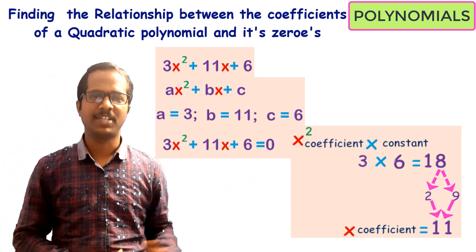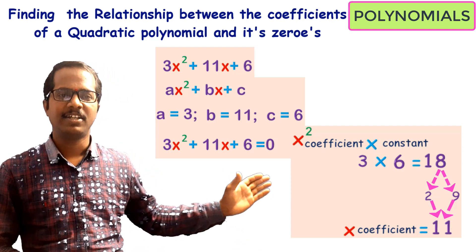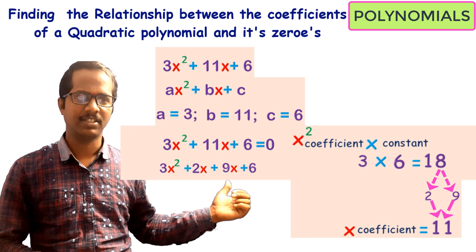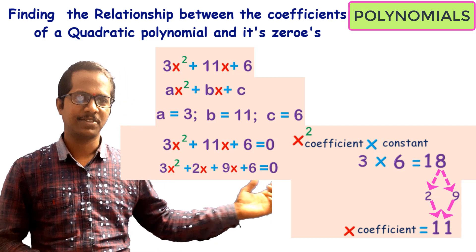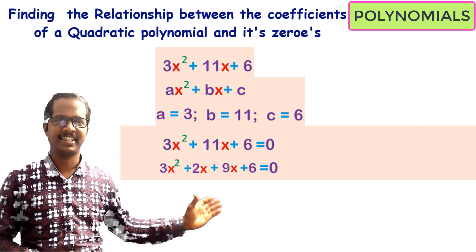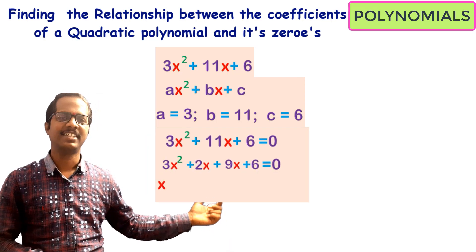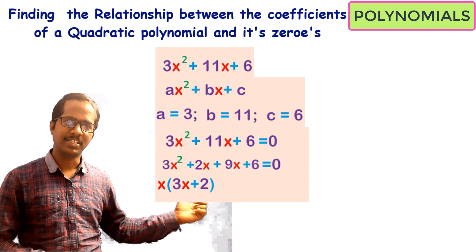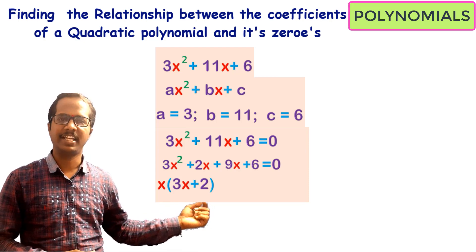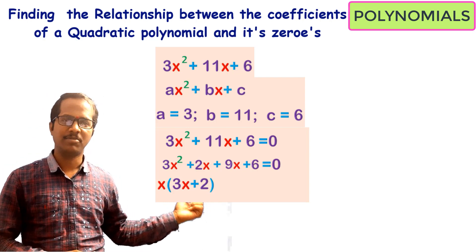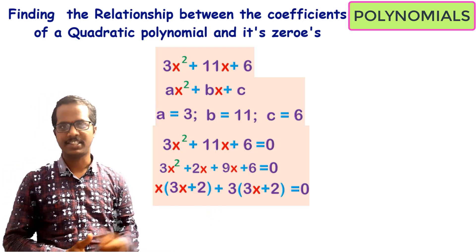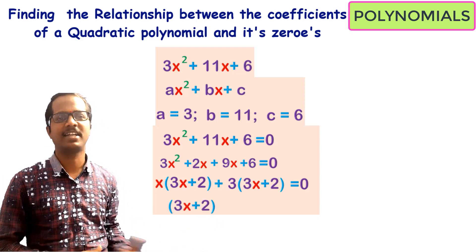Using this pair, we split the middle term: 3x² + 11x + 6 becomes 3x² + 2x + 9x + 6 = 0. In the first two terms, x is common, so taking x out gives x(3x + 2). In the next two terms 9x + 6, we have 3 as common, so taking 3 out gives 3(3x + 2). Now (3x + 2) is common in both groups.